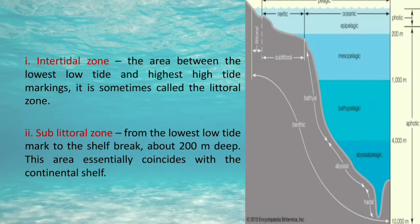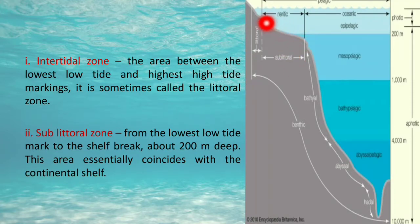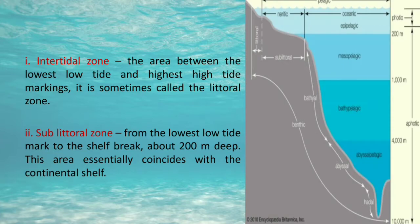The second zone is the sublittoral zone, which extends from the lowest low tide mark to the shelf break, about 200 meters deep. This area coincides with the continental shelf. Related terms here include continental shelf, continental break, and continental rise.